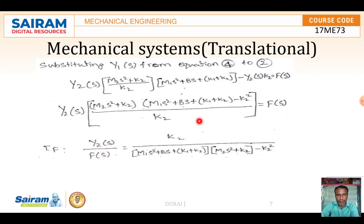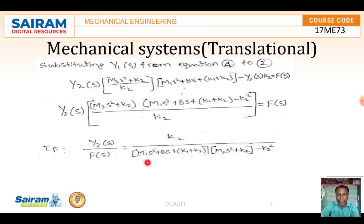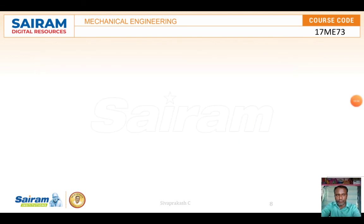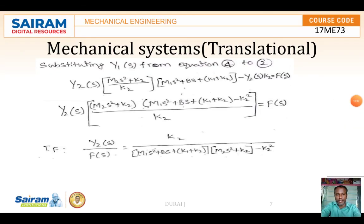The transfer function is Y2(s)/F(s) = K2 / [(M1·s² + B·s + K1 + K2)·(M2·s² + K2) - K2²]. This is the transfer function of this particular mechanical translational system, successfully converted into a mathematical model. Thank you.